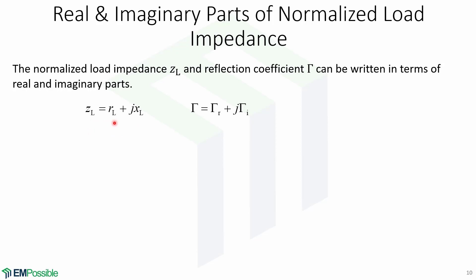Zl equals RL, which is the real part, plus XL, which is the imaginary part. Also for gamma, we have that it's equal to gamma R for the real part and gamma I for the imaginary part.